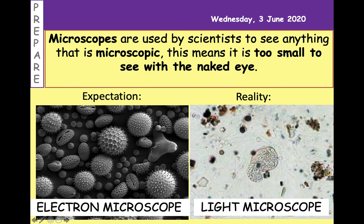If you haven't already guessed what the pictures are of, you might want to pause the video to avoid the spoiler. These are pictures of pollen. So if you've been suffering from hay fever, sneezing every five seconds with your eyes running — it's because of these pictures on the board. This is plant pollen. This is what gets trapped up your nose and makes you sneeze. You can see the level of detail on the electron microscope is amazing compared to the light microscope, and all these different grains are pollen from different plants.